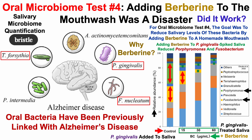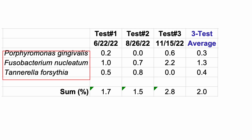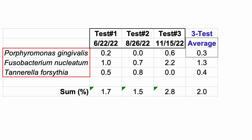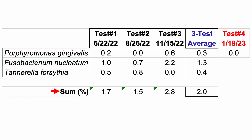Full disclosure: oral microbiome test number four with berberine in the mouthwash was a disaster. Here we can see levels of those three bacteria linked with Alzheimer's disease. My levels across the first three tests yielded a three-test average of 2% of all bacteria — in other words, the sum of those three bacteria was 2% of all my salivary bacteria.